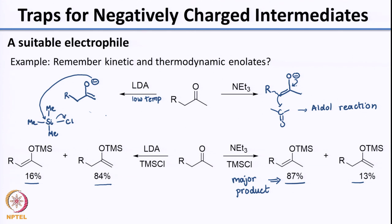In the case of the aldol reaction, since the carbonyl carbon is a softer electrophilic center, instead of oxygen interacting with it, you have the softer carbon nucleophilic center interacting with the electrophilic carbonyl carbon. Here, what happens is your O-Si bond is very strong. That is a huge driving force for the interaction of the oxygen center with silicon, which is why you are able to capture the enolate in the TMS form. This is one example where we have trapped an enolate using a trapping agent, TMS chloride.